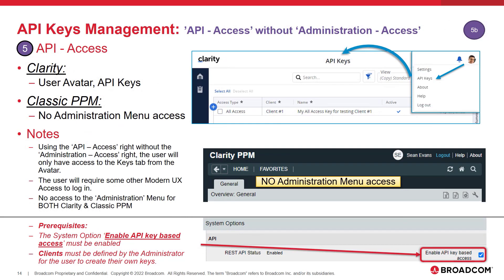If the API access right is granted without the administration access right, the user will still have access to create their own API keys through the avatar menu. As a prerequisite, an administrator with access into Classic PPM Administration System Options page can set the option to Enable API Key Based Access. Also, an administrator with access into Clarity's Authentication and Keys tile must set up at least one client. Based on granting this access right alone, the user cannot access Clarity unless they also have at least one other modern UX menu navigational access right granted, such as My Workspace or Project Management. The user will not have the administration menu access for both Classic PPM and Clarity.